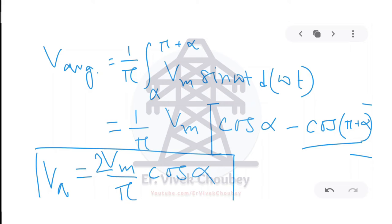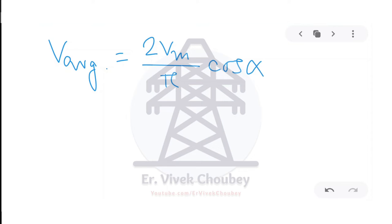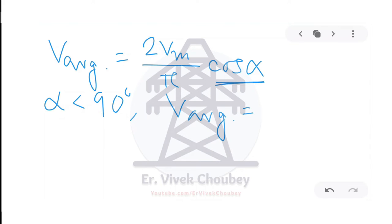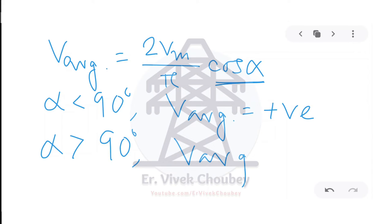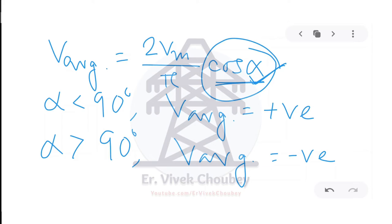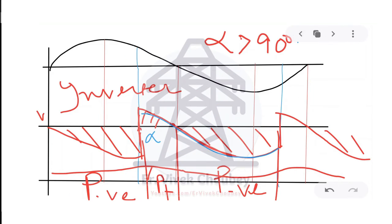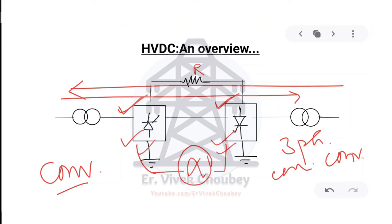This equation V_average = (2Vm/π)·cos α is very important and self-explanatory. For alpha less than 90°, cos α is positive, so V_average is positive — confirming rectifier behavior. For alpha greater than 90°, cos α is negative, so V_average is negative — confirming inverter behavior. We can convert the same machine to an inverter or rectifier simply by controlling the firing angle alpha through a control circuit. This derivation was shown for single-phase; it can be extended to three-phase fully controlled converters.